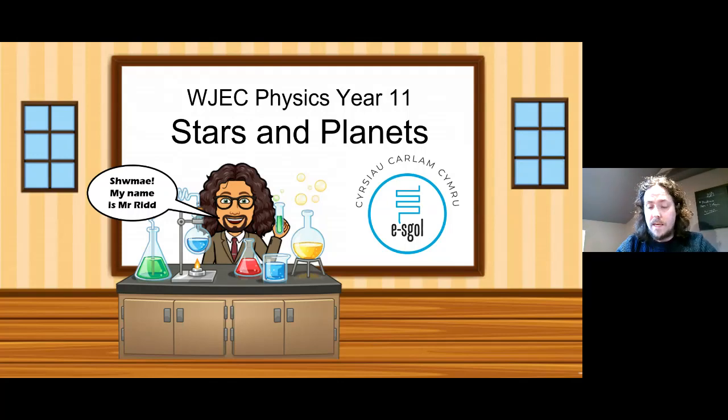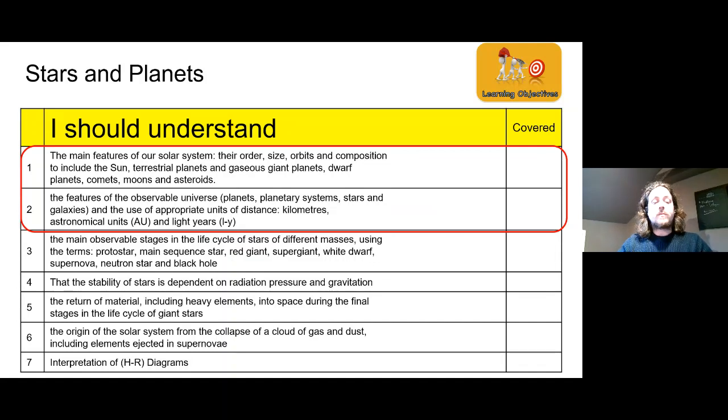So we're going to jump straight in and look at what we're going to be covering today. The main features of our solar system: the order, size, orbits, and composition to include the sun, terrestrial planets, gaseous giant planets, dwarf planets, comets, moons, and asteroids. There's a huge amount in there which we'll pick apart now. You'll know a lot of them already, I'm sure, but there might be a few that you're uncertain about.